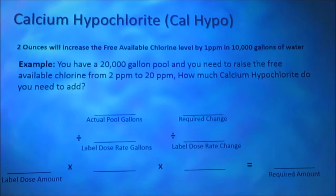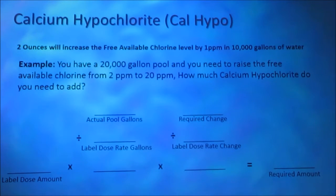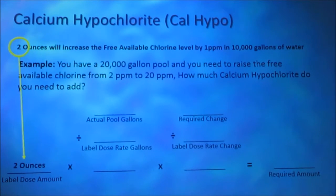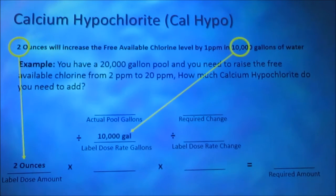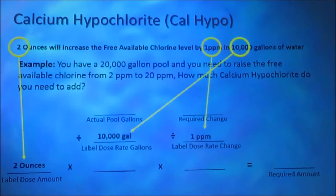Our label instructions read: 2 ounces will increase the free available chlorine level by 1 part per million in 10,000 gallons of water. From our label instructions, we take the label dose amount, the dose rate gallons, and also the part per million increase.